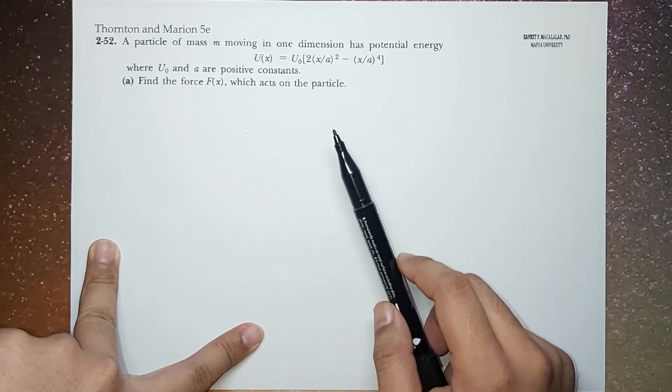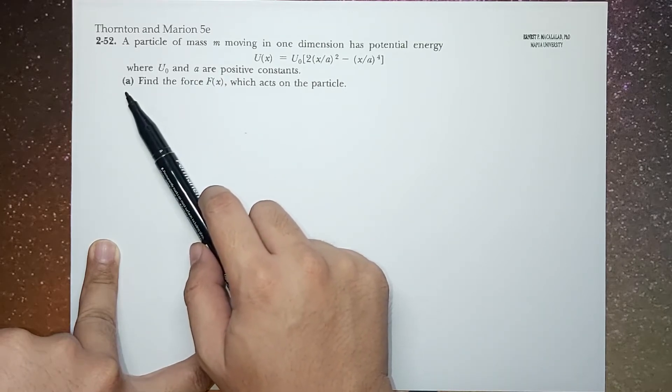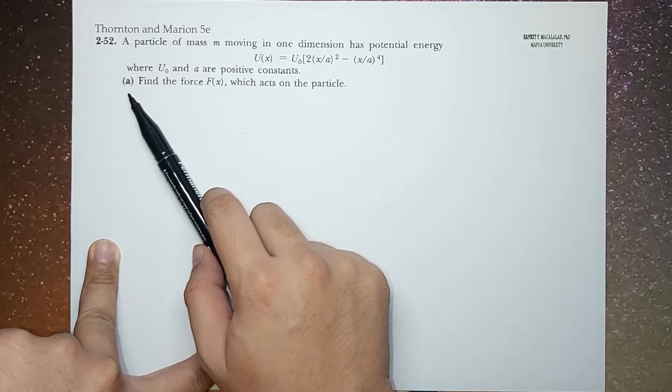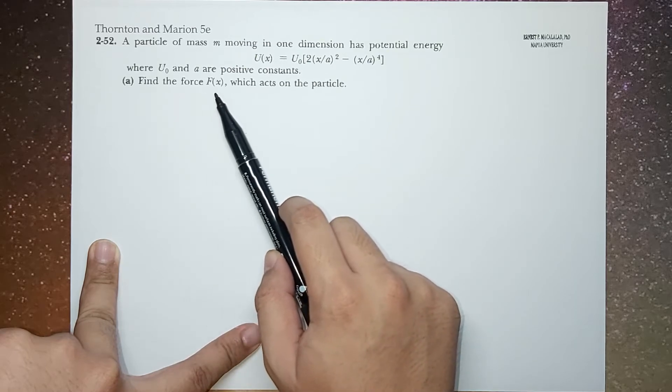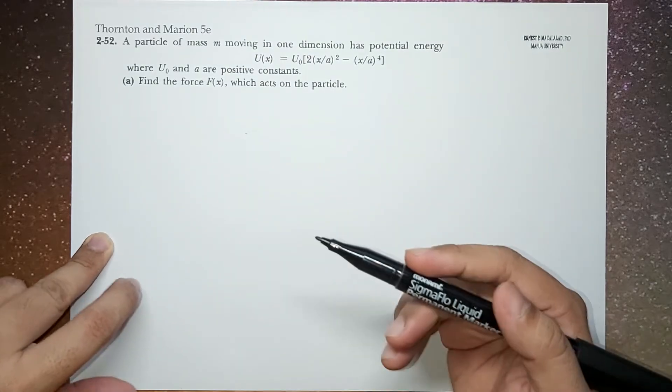So this is a five-part question. We start with letter A. Letter A states that find the force F, which is the function of X, that acts on the particle.